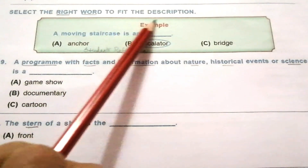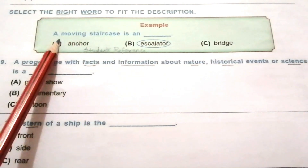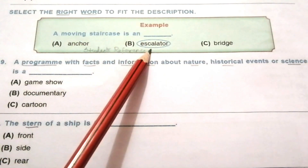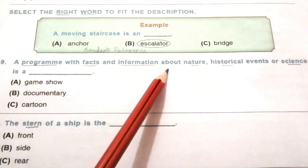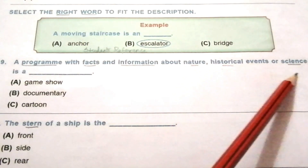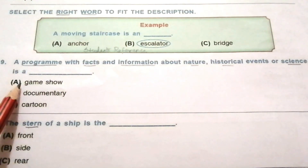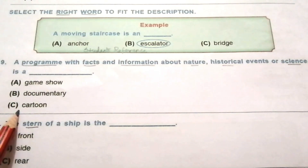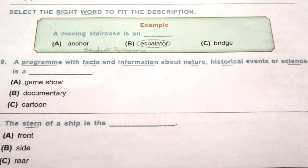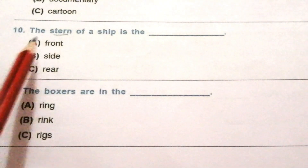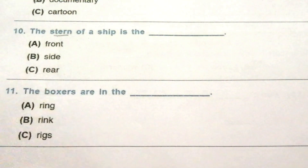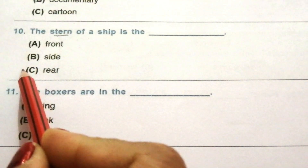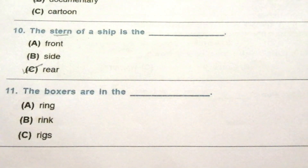Select the right word to fit the description. Example: a moving staircase is an escalator. Question 9: a program with facts and information about nature, historical events or science is a — game show, documentary, cartoon. The answer is B, documentary. Question 10: the stern of a ship is the — front, side, rear. The answer is C, rear. Rear means backside.